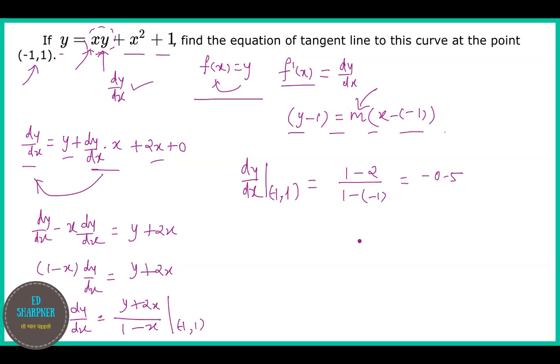So now m value is -0.5, so tangent line equation would be y - 1 = -0.5(x + 1). So this is the equation of the tangent line and is the final answer.